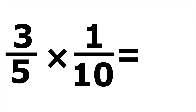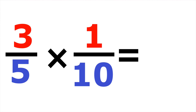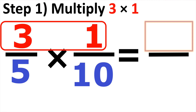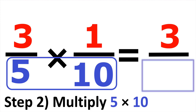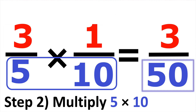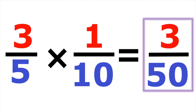Our fifth example, we have three-fifths times one-tenth. Three and one up top, five and ten at the bottom. So we start with the top: three times one gives us three. Then we multiply five times ten to get our denominator of fifty. The answer is three over fifty.